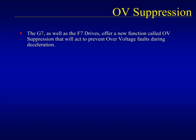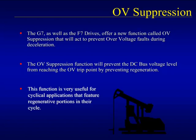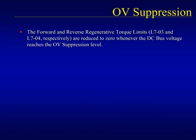The final new G7 function we will cover in this eLearning module is the overvoltage suppression function. Both the G7 and F7 drives feature OV suppression that will act to prevent some overvoltage faults during motor regeneration. The goal of OV suppression is to prevent excess power regenerated back to the drive during deceleration or from an overhauling load from raising the DC bus voltage to its trip level. Successful use of OV suppression will be very useful for cyclic applications that feature a regenerative portion to their cycle, such as the pump jack shown here. The OV suppression function prevents the DC bus from reaching trip levels by dropping the regenerative torque limit to zero whenever the bus voltage reaches a certain level.